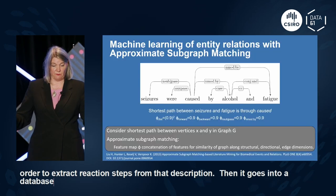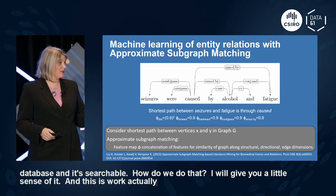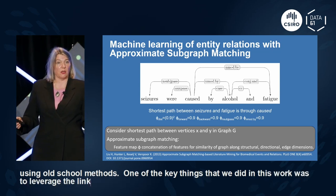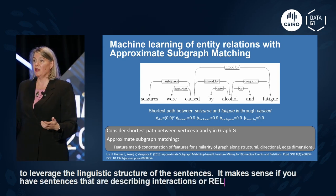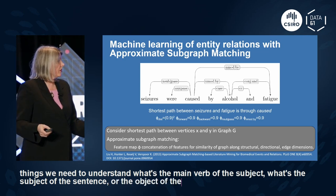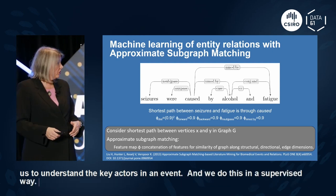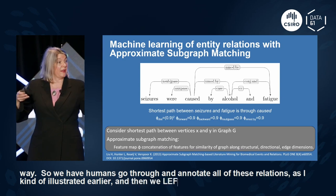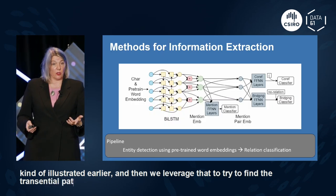Here's an example of how we do that: we take a sentence, find the chemical mentions, then find how they're connected to extract reaction steps. This goes into a searchable database. This is work from 2013 using older methods. One key thing was leveraging the linguistic structure of sentences — understanding the main verb, subject, and object, which is important for identifying the key actors in an event. We do this in a supervised way: humans annotate all the relations, and we leverage that to find sentential patterns matching the relationships we want to extract.